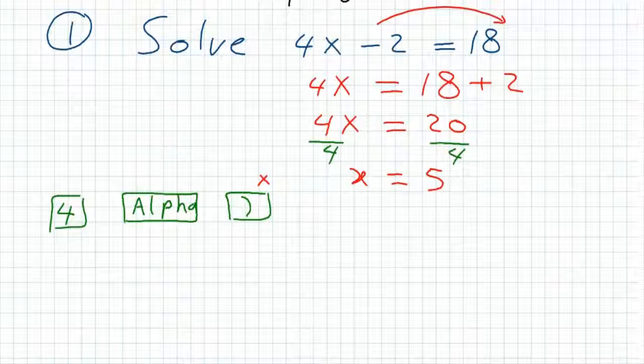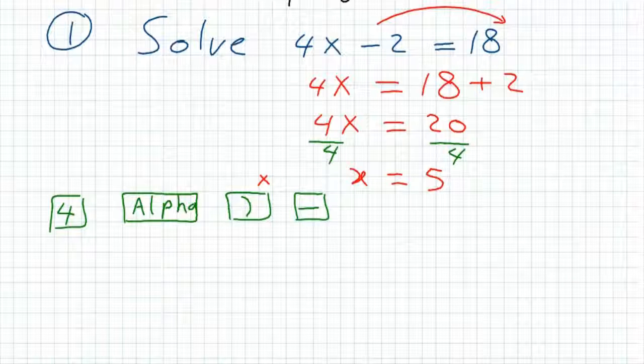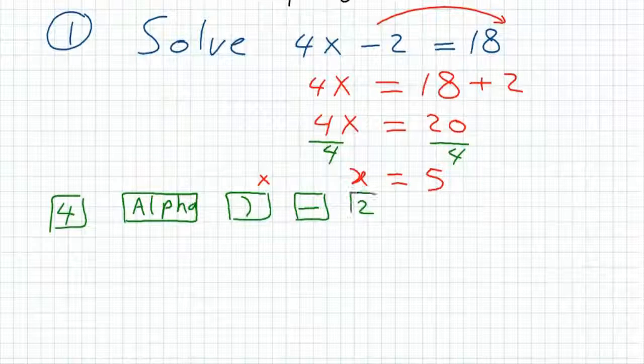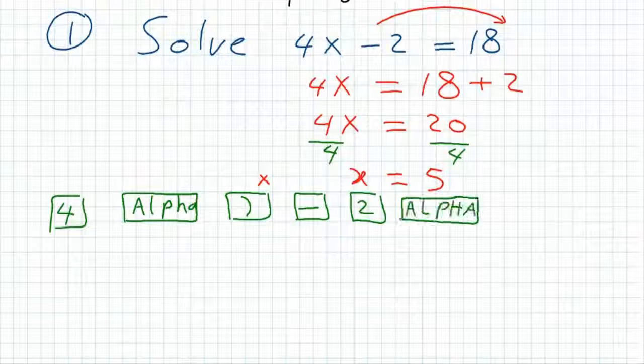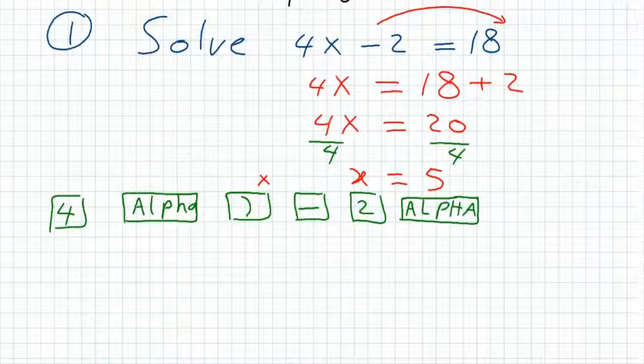Then we continue inserting the equation by pressing minus, then 2. To insert equal, we need again to press alpha, then the button calc on the left top of your calculator where you can find the equal symbol over it.